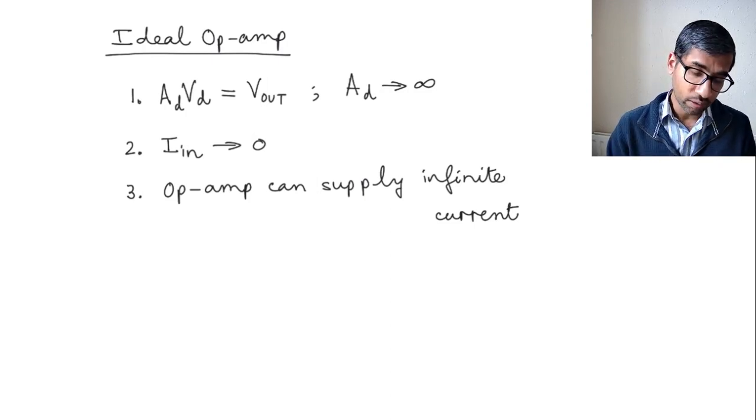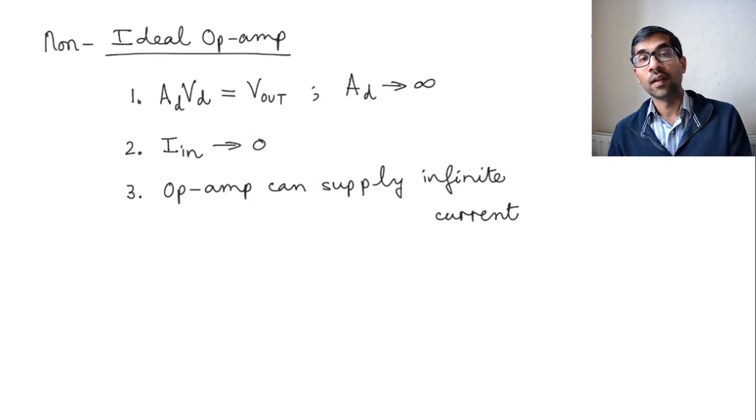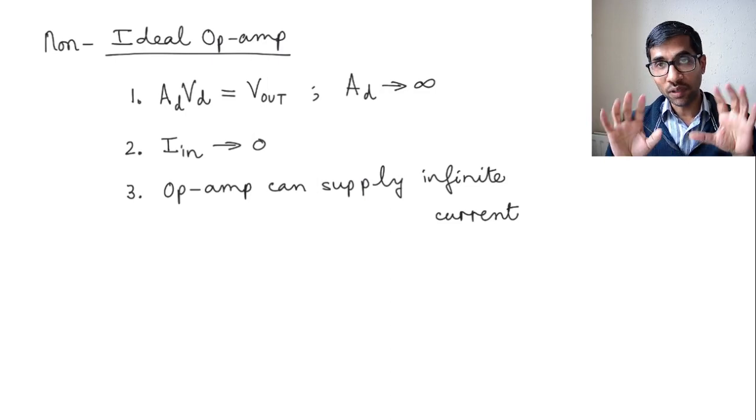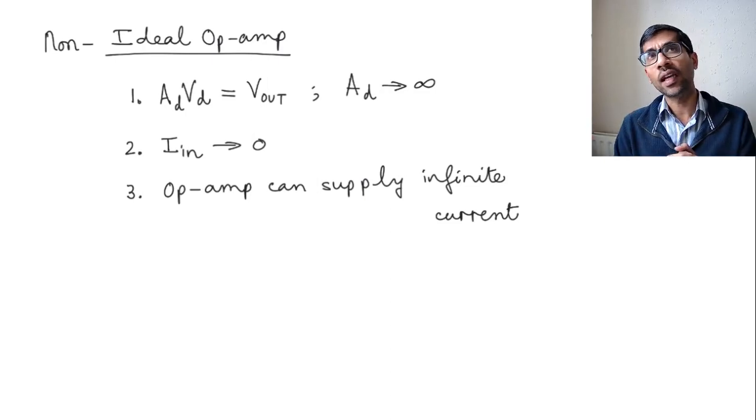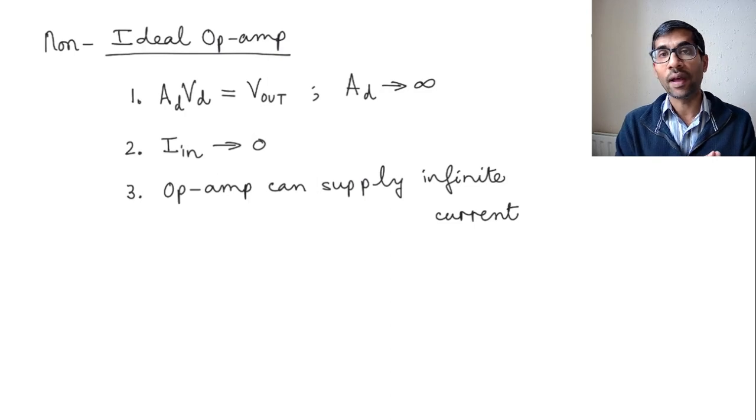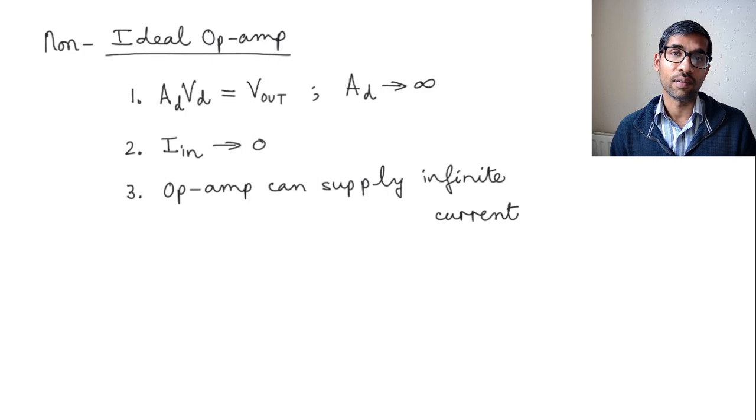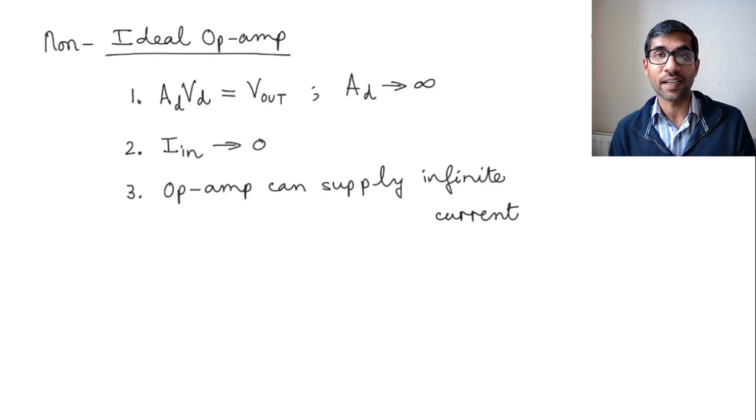In other words, we could call it the non-ideal op-amp. The way we will do that is we're not really going to analyze non-ideal behavior, but we're going to look at the ideal behavior and ask how the behavior of the op-amp deviates from the ideal op-amp behavior. We'll discuss the first non-ideality in the next video.